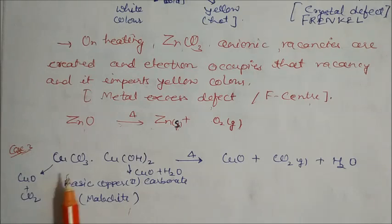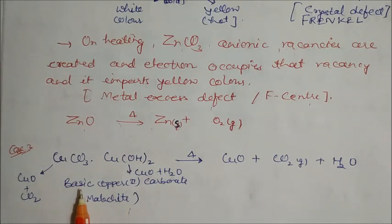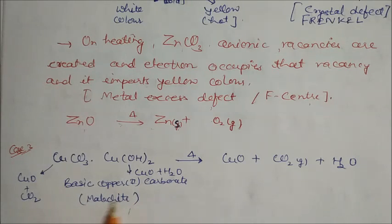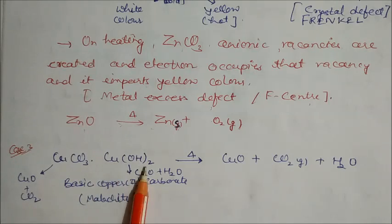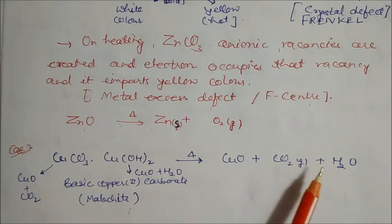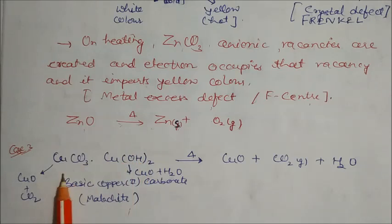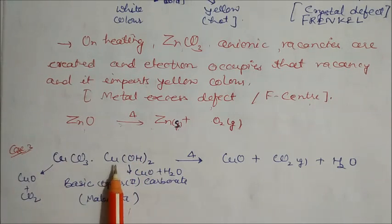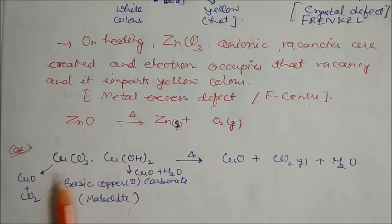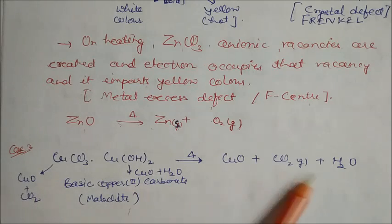Basic copper carbonate, CuCO₃·Cu(OH)₂, also known as malachite ore, on heating gives CuO, CO₂, and H₂O. The CuCO₃ component converts to CuO and CO₂, while the Cu(OH)₂ converts to CuO and H₂O — so CuO is the common product along with CO₂ and H₂O.